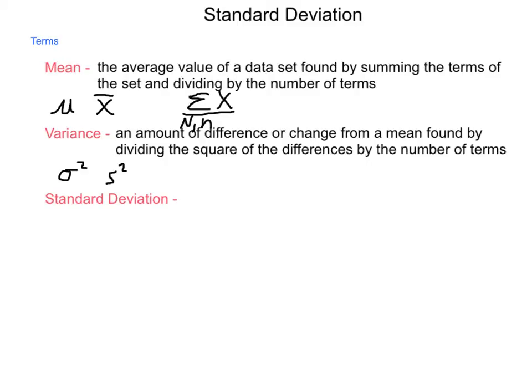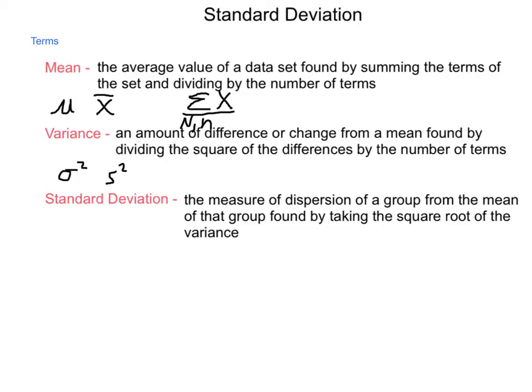Last, we have standard deviation itself. And this is the measure of dispersion of a group from the mean of that group found by taking the square root of the variance. So, if variance is signified by a sigma squared or an s squared, standard deviation is simply going to be sigma or s, depending on if it is a population or a sample.